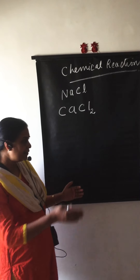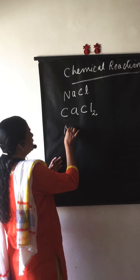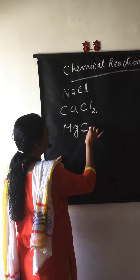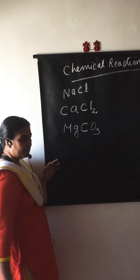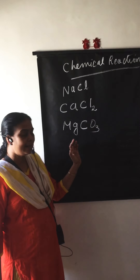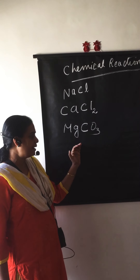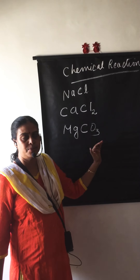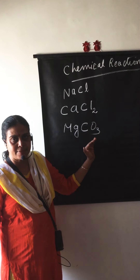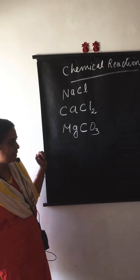Now let's take different examples. For example, magnesium carbonate: magnesium is Mg and carbonate is a radical CO3. In this case, both are having valency 2 — magnesium valency 2 and carbonate valency 2. So no need to write anything, since the valency is the same for both elements.